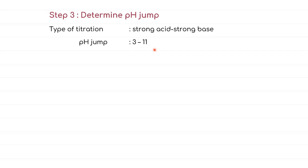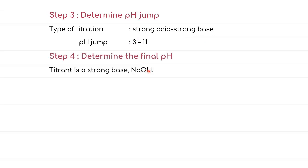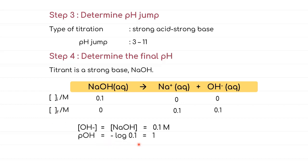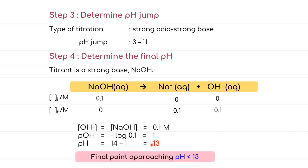The titration of strong acid and strong base forms a neutral salt with pH = 7. Therefore, the pH jump will be between 3 and 11. For the final pH, we write the dissociation of the titrant NaOH into Na⁺ and OH⁻. Substituting [OH⁻] = 0.1 M into the formula: pOH = −log(0.1) = 1, and then pH = 14 − 1 = 13. Since no specific volume is given, the pH at a considerably large titrant volume will approach 13.